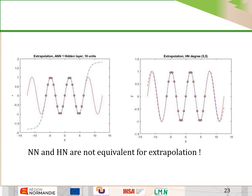One interesting feature of Hilbert networks is that they are not equivalent to neural networks for extrapolation. As you can see in this example: on the right you have the extrapolation outside the data set for a Hilbert network, and on the left the same extrapolation for a neural network.